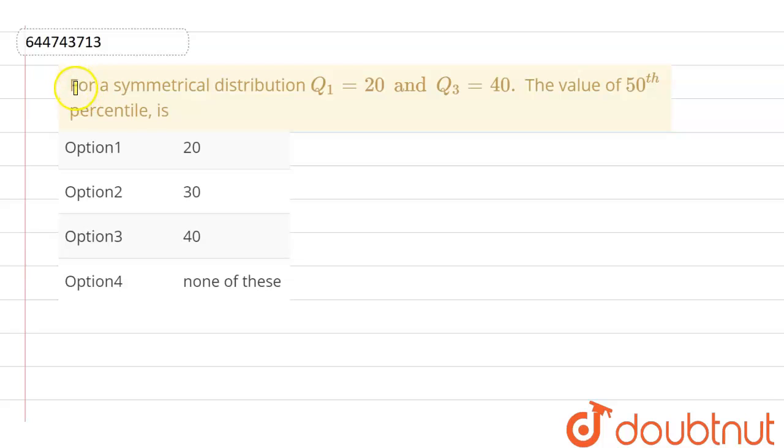In this question, it is given that for a symmetrical distribution, Q1 is given as 20 and Q3 is given as 40. We need to find the value of 50th percentile.